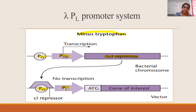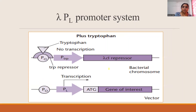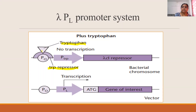Adding tryptophan to the medium causes tryptophan to bind with the TRP repressor, making it active. The active TRP repressor then binds to the operator of the TRP promoter, causing repression of CI. As there is no more CI repressor synthesized in the cell, the PL promoter becomes active and transcription of the cloned gene begins, allowing expression from the cloned gene.